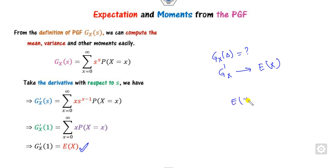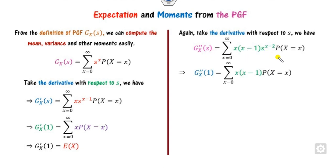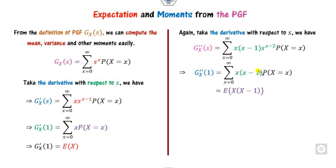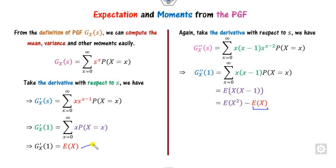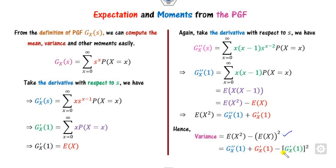To find E[X²], you take the second derivative of G(S) and again set S equal to 1. The expression you get is E[X(X−1)], which equals E[X²] − E[X]. Since E[X] is nothing but the first derivative of the PGF at S=1, you can find E[X²] from this. Once you know E[X²] and E[X], you can compute the variance.